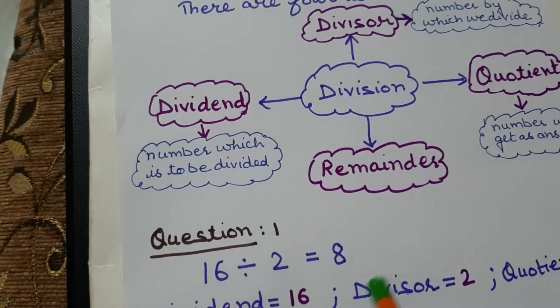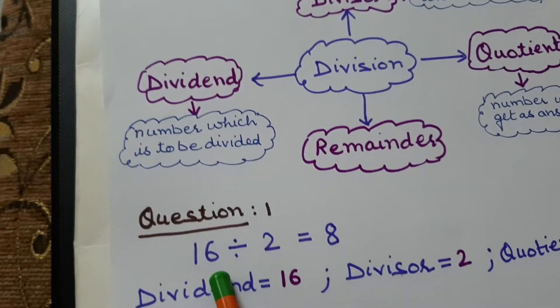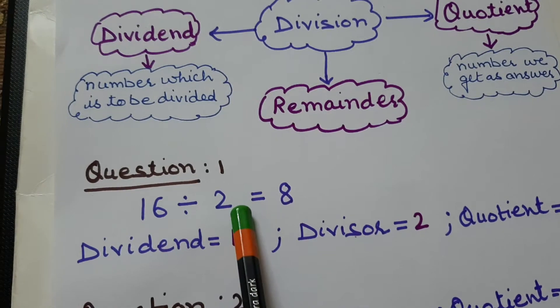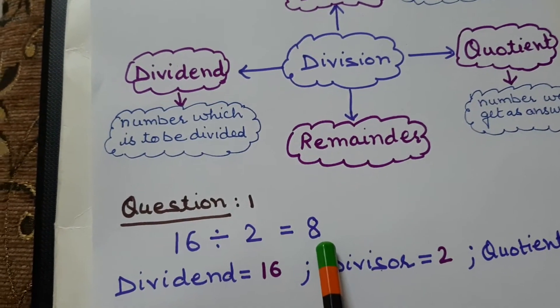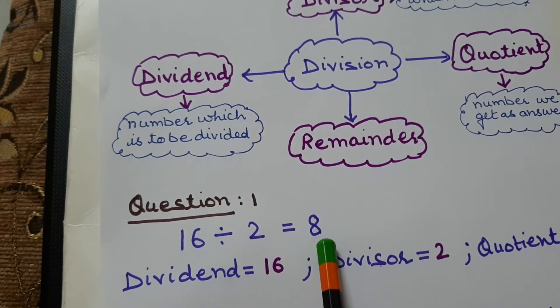So in this statement, 16 is dividend, 2 is divisor and 8 is quotient. I hope it's clear to all.